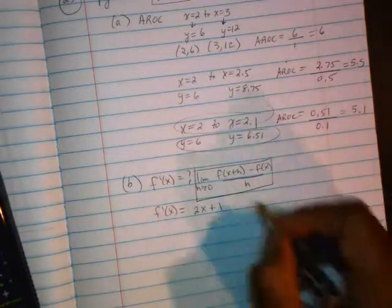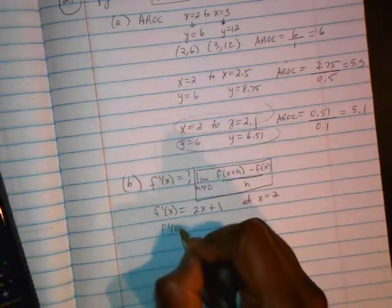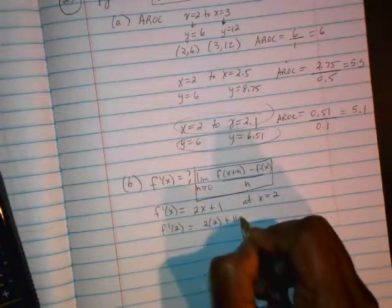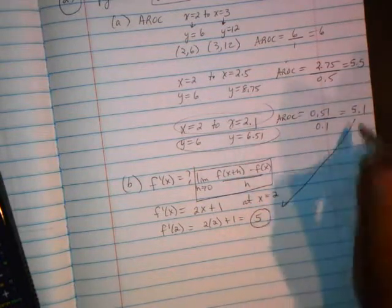The question said to find this at x equals 2. So we're going to simply plug in 2 for x. So find f' at 2. That's 2 times 2 plus 1, 4 plus 1, which is 5. And that's what these were getting close to.